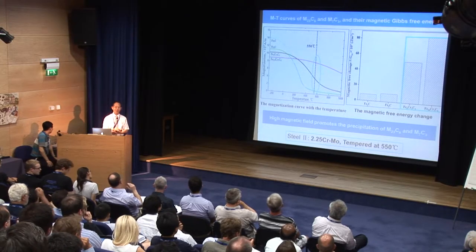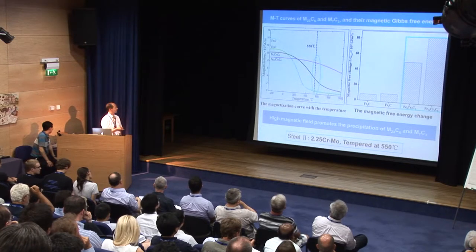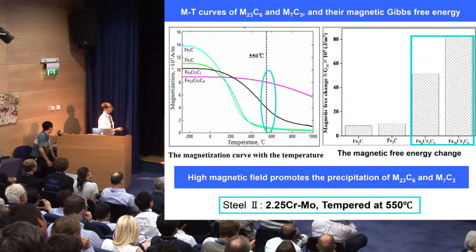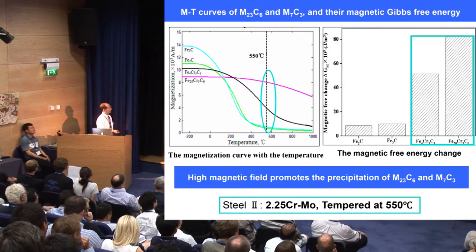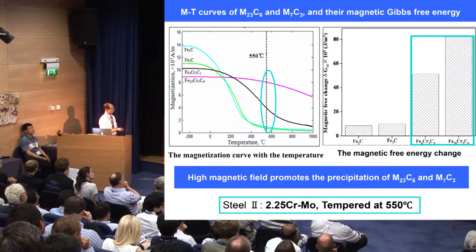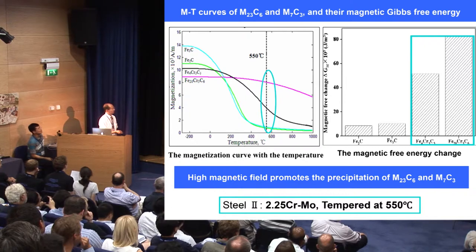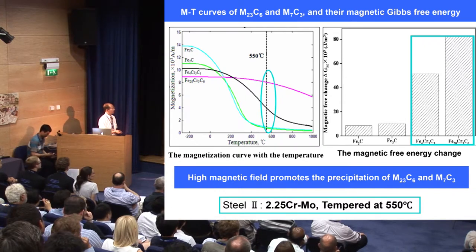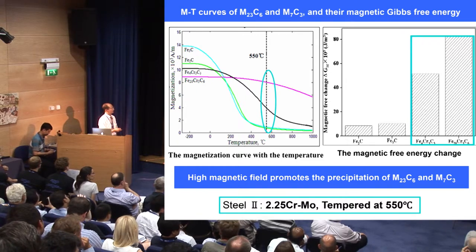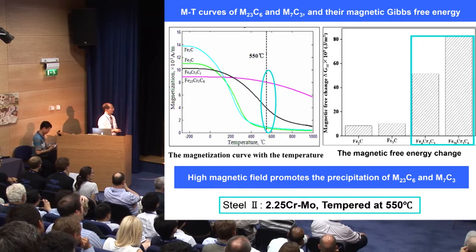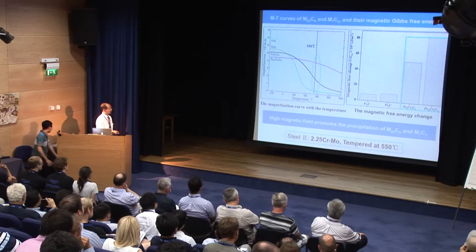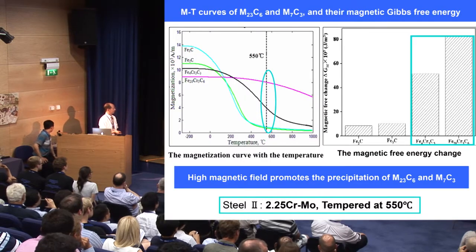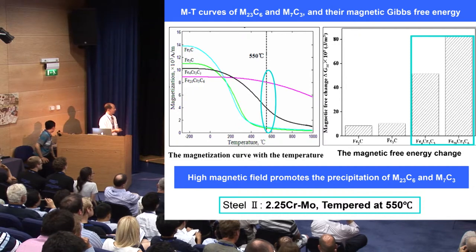For the chromium-molybdenum alloy, we have similar results. In this figure, we can see that the magnetic free energy change for M7C3 and M23C6 means that M7C3 is promoted by the high magnetic field. In this figure, M23C6 has the largest magnetic energy compared with other austenoid carbides. So we have seen that the austenoid carbides of M23C6 and M7C3 are promoted by the high magnetic field.